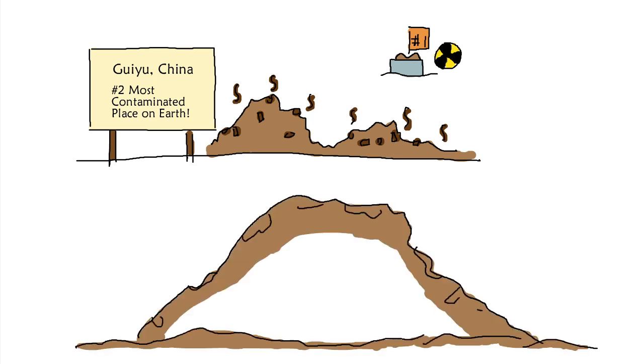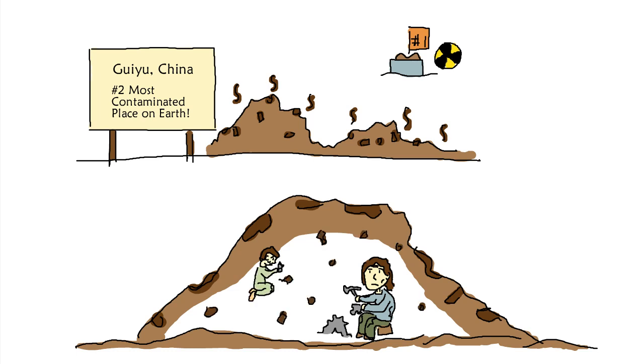In places like Guiyu, the recycling is carried out in the most primitive and toxic ways imaginable. The electronics are smashed apart with hammers by workers huddled on the ground using no protective gear. The plastic parts, never designed for disassembly, are simply smashed or burned off to recover some of the metals inside.